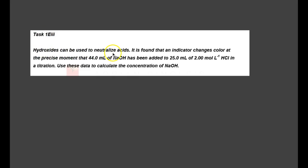Hydroxides can be used to neutralize acids. It is found that an indicator changes colors at the precise moment that 44 milliliters of sodium hydroxide has been added to 25 milliliters of 2 molar HCl in a titration. Use these data to calculate the concentration of NaOH.